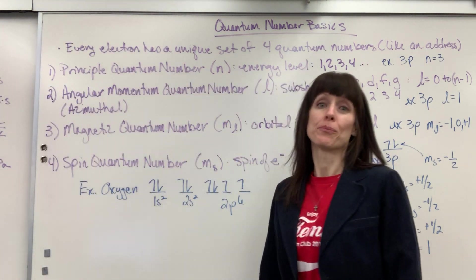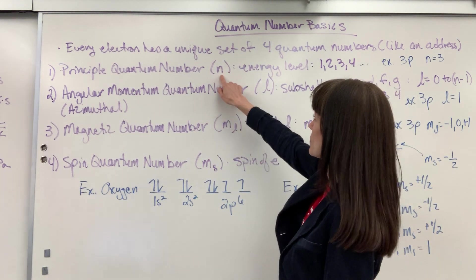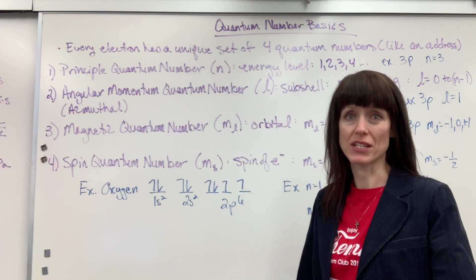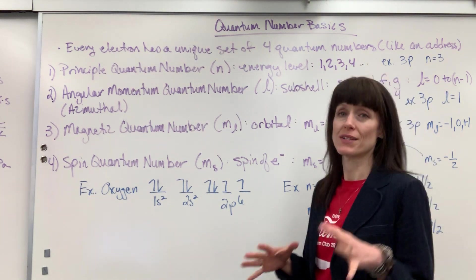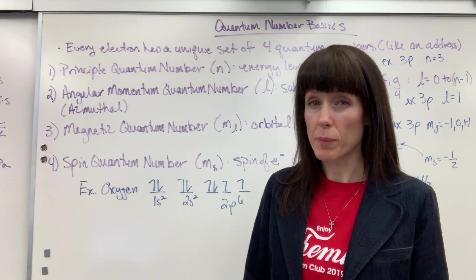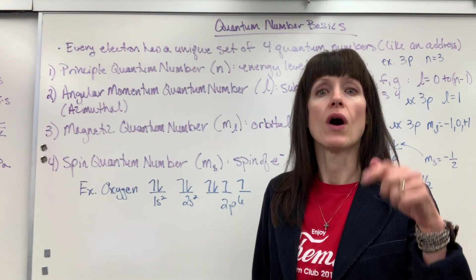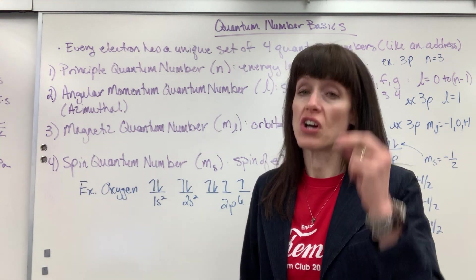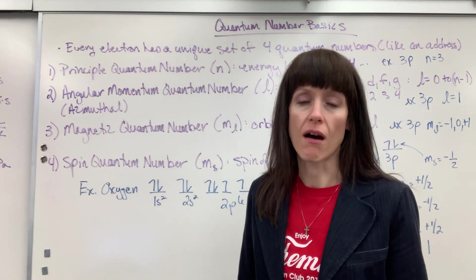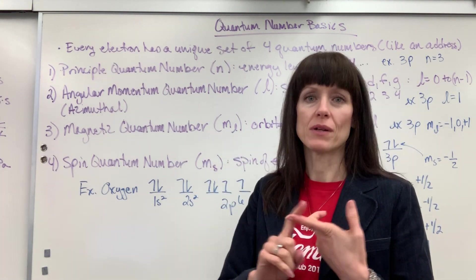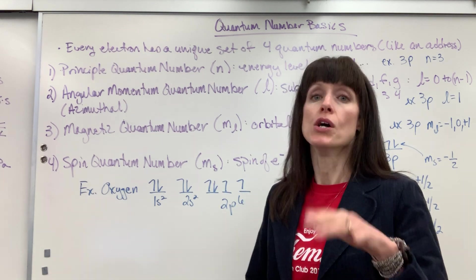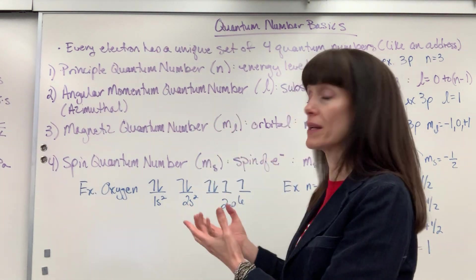First of all, we have what's called the principal quantum number. That symbol is N. It's really just the energy level. If you do not know how to do electron configuration or orbital notation, look down below — I've included those two links. You've got to watch those videos first. This will make no sense at all unless you know how to do orbital notation and electron configuration. Stop, pause, go watch those, come back, and then this will tie it all together.